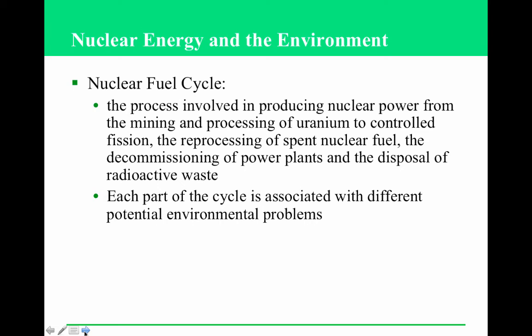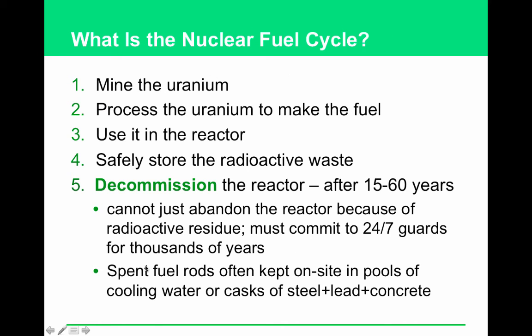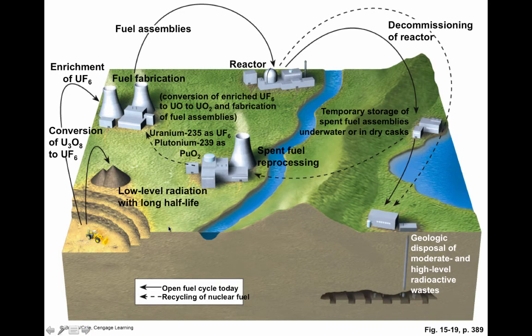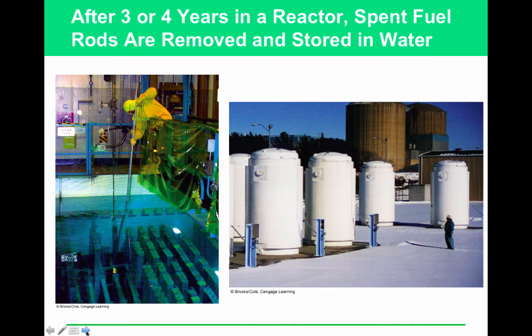How is nuclear waste currently disposed of? Temporary storage at the plants that generated it — held in pools of cooling water or casks of steel, lead, and concrete. At some point the entire reactor becomes radioactive too, and you've got to shut it down and guard it. Spent fuel rods, although not efficient enough to create electricity anymore, are still pretty radioactive. A dirty bomb is a conventional bomb where spent fuel rods have been put into the mix, basically firing radioactive shrapnel everywhere — so this stuff has to be guarded.